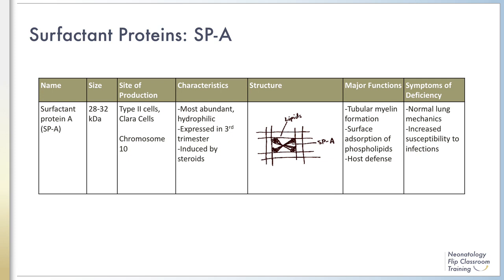Clara cells contribute apoproteins A, B, and D, as well as other proteases, peptides, cytokines, and mucins to the extracellular fluid lining the airspace. Chromosome 10 is responsible for formation of surfactant protein A early in the third trimester. Its weight is between 28 and 32 kilodaltons, and its production is induced by steroids in vitro.